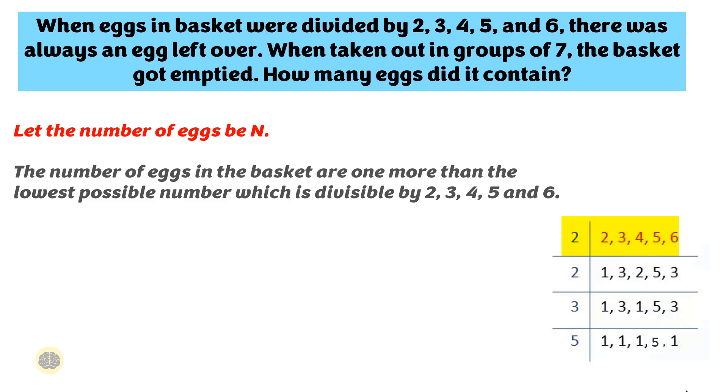In step 2, 2 divides 2, 4 and 6 but it is not a factor of 3 and 5. Then write the numbers 3 and 5 in the row below as it is. Continue the steps until all co-prime numbers are left in the last row.